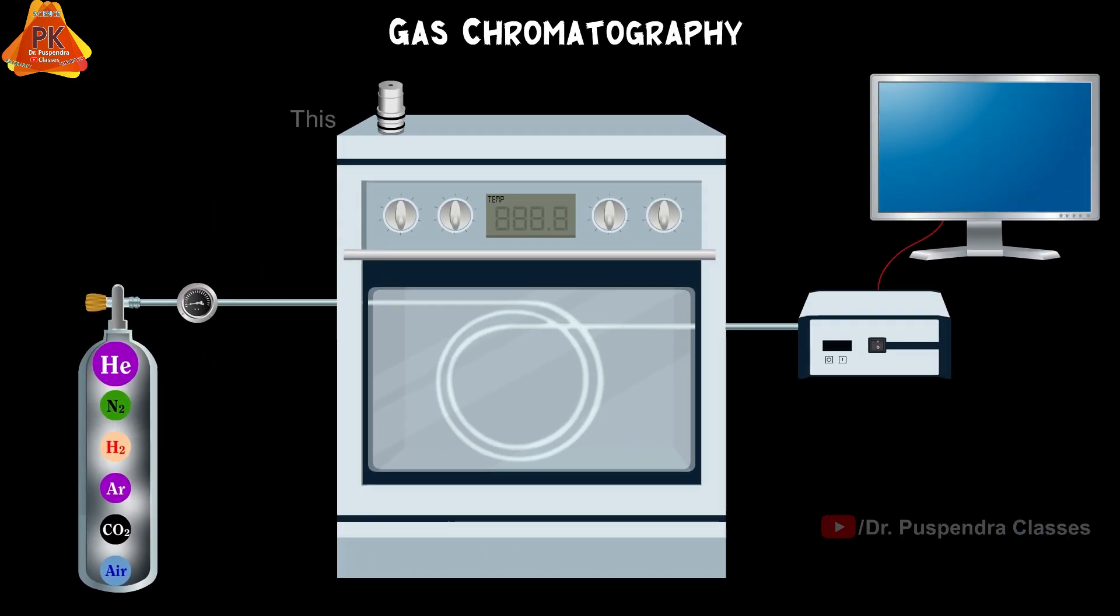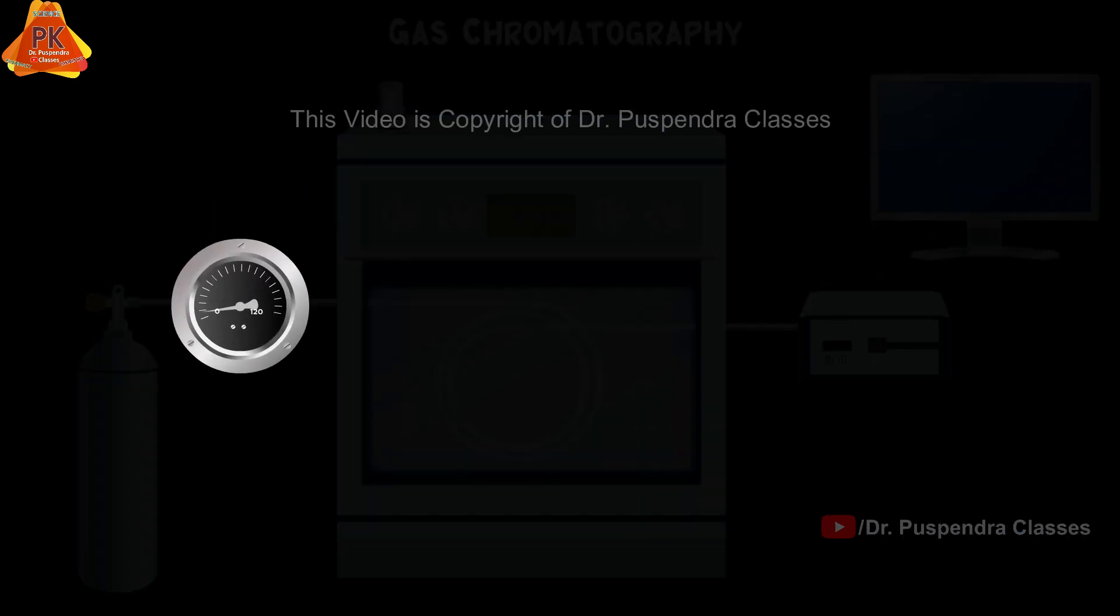The next part of the GC instrument is the gas controller. It helps to control the gas flow rate in GC. Pressure of gas should be in the range of 40 to 80 per square inch.